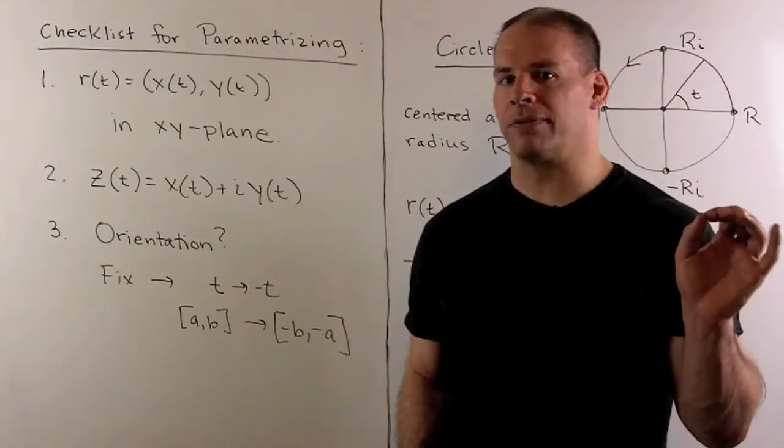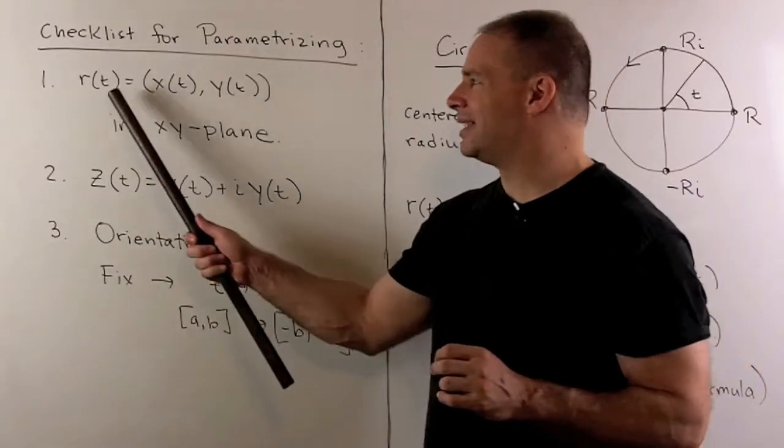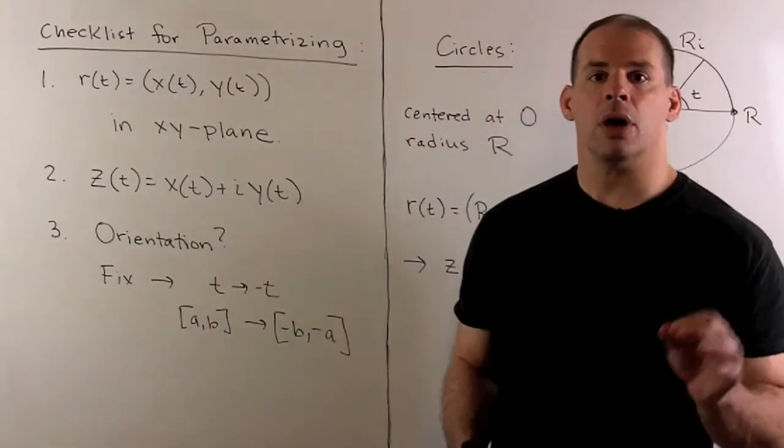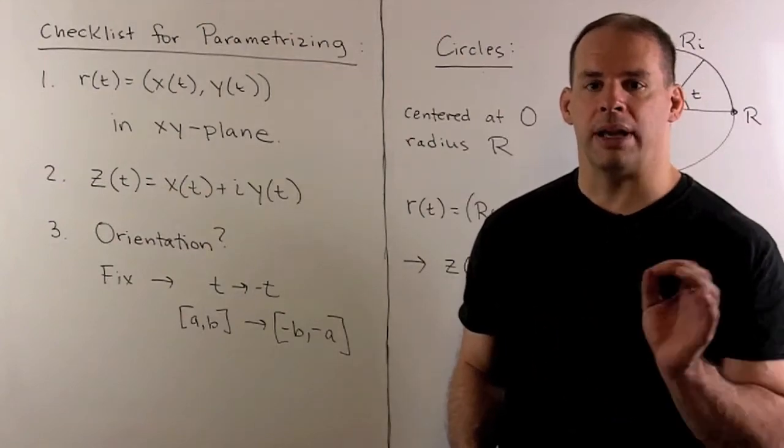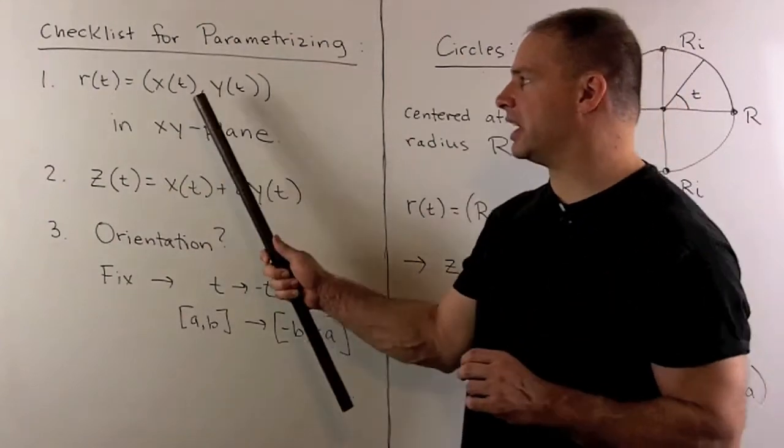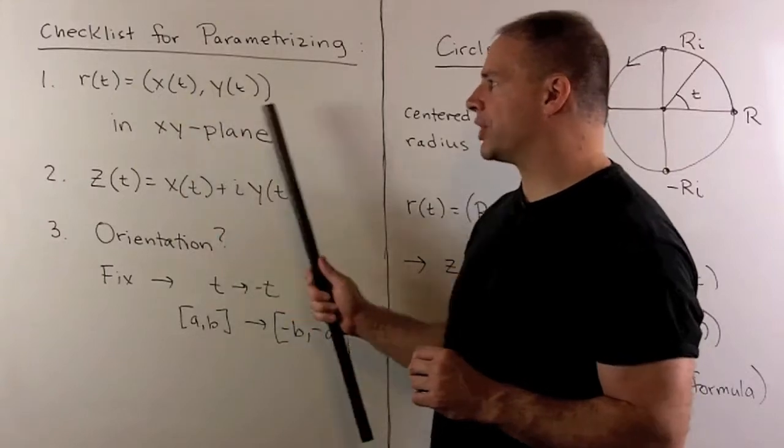We have a checklist for parametrizing curves in the complex plane. First step, treat our curve as a subset of the XY plane. Then, to parametrize, we're looking for a function r of t. t is going to be a real number. When I fix a t, that's going to return a point in the plane. We'll need two functions, x of t and y of t, to represent our coordinates.